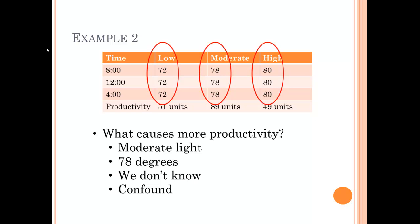The problem with a confound can be easily seen in this chart. We ask ourselves: what causes more productivity — is it moderate light levels, or is it 78 degrees? The answer is we don't know. This is where we go back to the idea that in the vernacular, a confound means to confuse. Basically, we have a confused experiment. We don't know if temperature or lighting is the cause of the increased productivity. We don't do an experiment to become more confused — we do an experiment to resolve confusion. That's why confounds are bad.